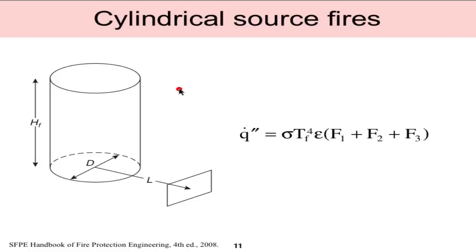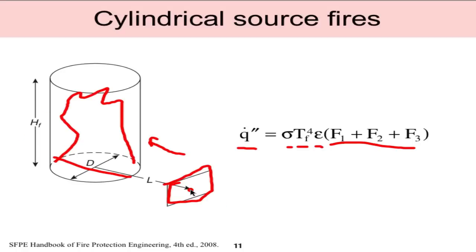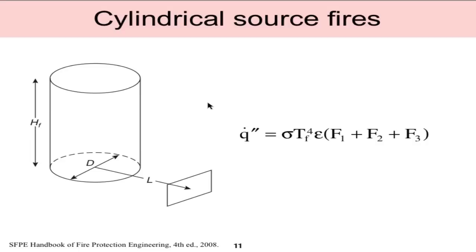The next approximation is the cylindrical source method. If we have a target such as a structural member and we get closer to the fire — inside the range of 4 to 5 diameters away — we're now in the near field of the flame and have to consider a finite volume and size of the flame itself. I'm not going to do an example of this because it is tedious, but the incident heat flux to the target equals sigma times the flame temperature, the emissivity, and some view factors that account for the cylinder shape and how they see the target. This is for near-field effects, whereas the previous two examples are for far-field effects.